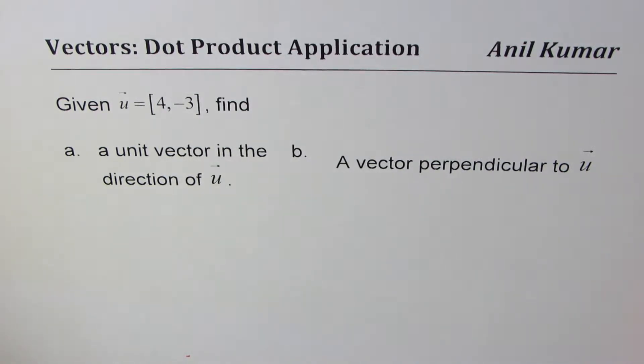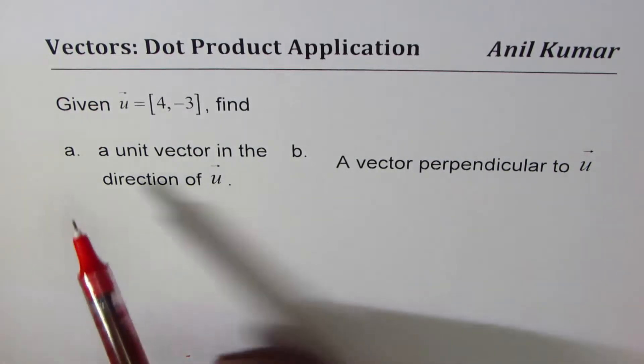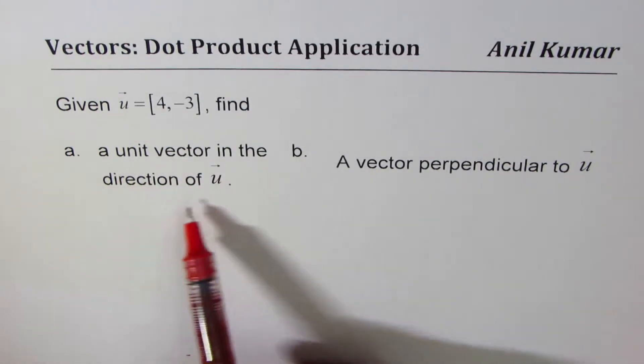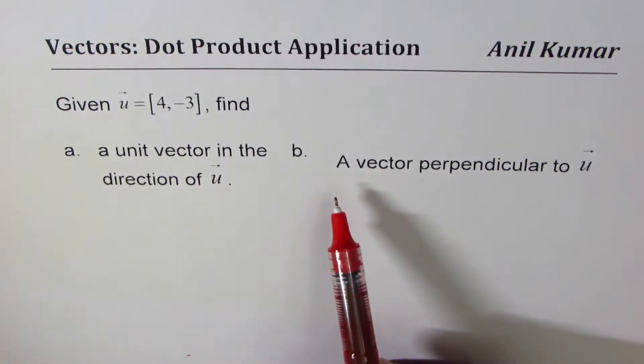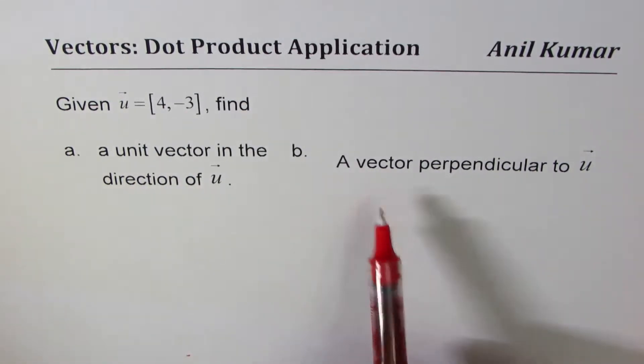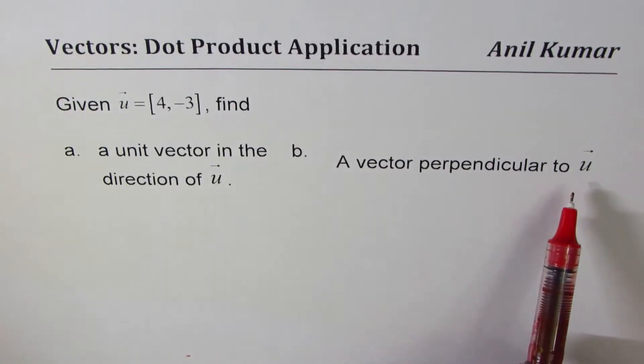The question here is: given vector u = [4, -3], find (a) a unit vector in the direction of u, and (b) a vector perpendicular to vector u.